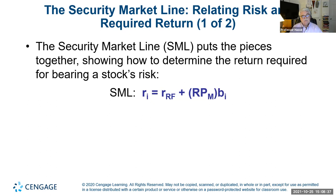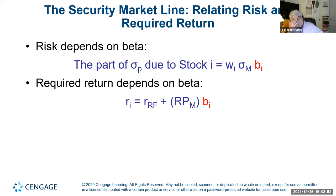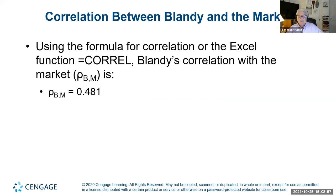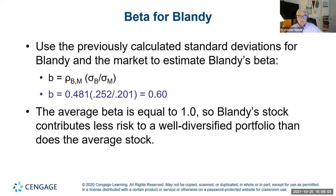Why does stock price grow? Because supply and demand from investors generates a rising stock price. When stock falls, it means more people are selling than buying because they don't see a return anymore. Our goal this week is to understand risk and return through the Capital Asset Pricing Model and the role beta plays. For example, here's a company called Blandy — they have a beta to calculate — and I want to show you how beta is calculated using standard deviation of the market compared to the company.